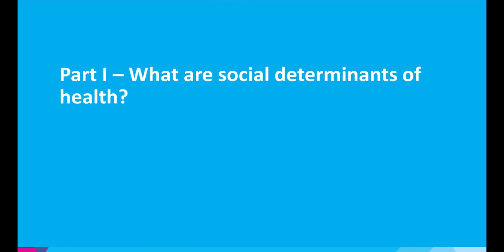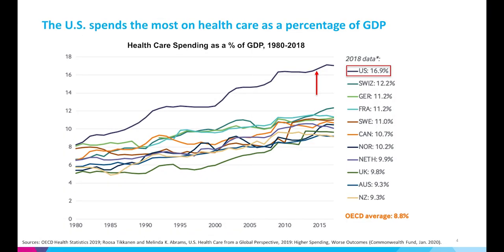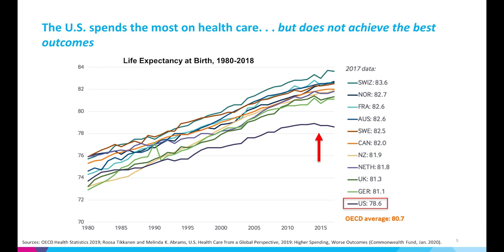Part one: what are social determinants of health? Let's start with some background information on healthcare spending. The U.S. spends the most on healthcare as a percentage of gross domestic product. You can see the line at the top indicating that in 2018, the U.S. spent nearly 17% of GDP on healthcare, noticeably above the other lines. That rate has continued to increase since 2018. Although the U.S. spends the highest percent of our GDP on healthcare, we don't achieve the best health outcomes.